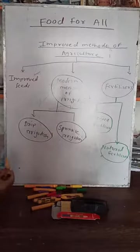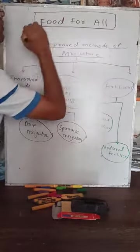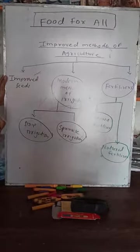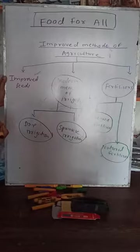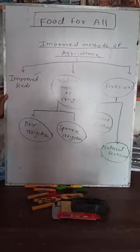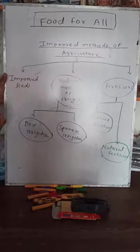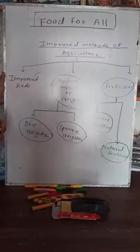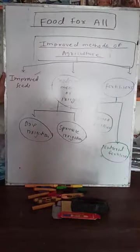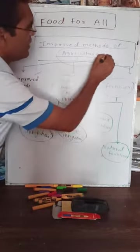Today's lesson is 'Food for All.' Yesterday we started this lesson and covered the first topic: agriculture, different types of agriculture, agricultural work, traditional agriculture, and the seasons for agriculture — the Rabi season and the Kharif season. Today I want to discuss the improved methods of agriculture.